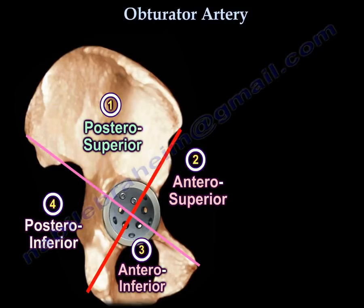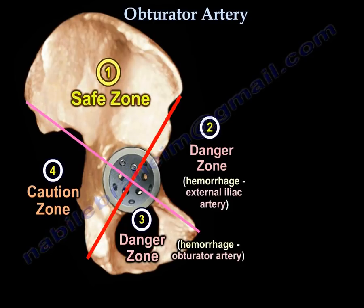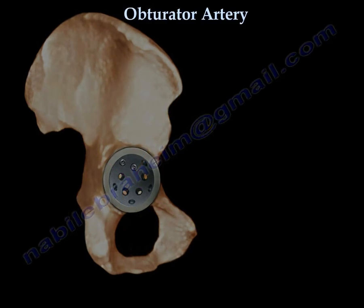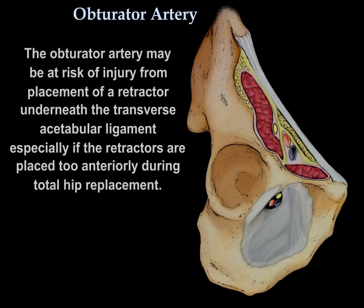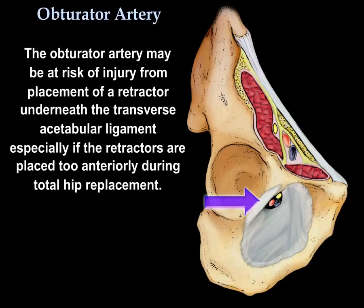This diagram shows the different quadrants and zones for insertion of acetabular screws in total hip arthroplasty. The obturator artery may be at risk of injury from placement of a retractor underneath the transverse acetabular ligament, especially if the retractors are placed too anteriorly during total hip replacement.